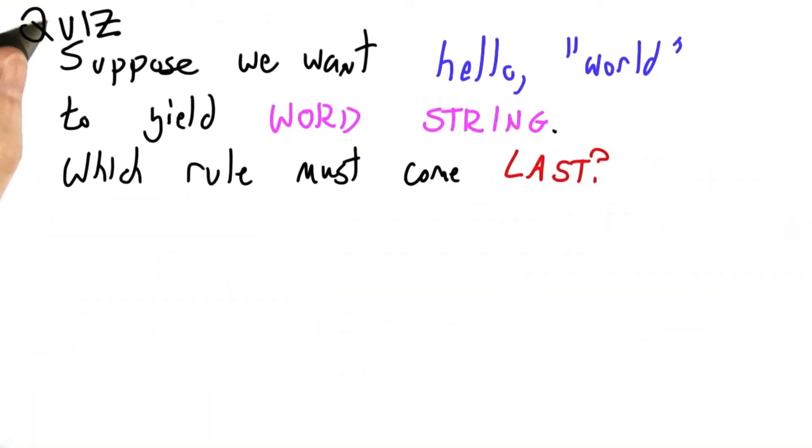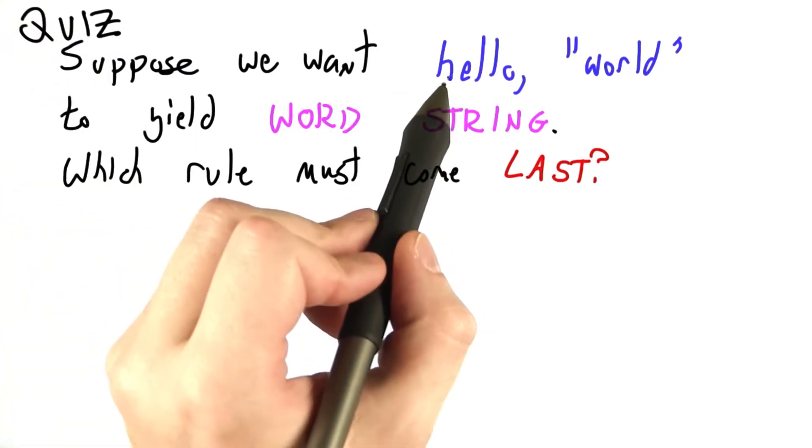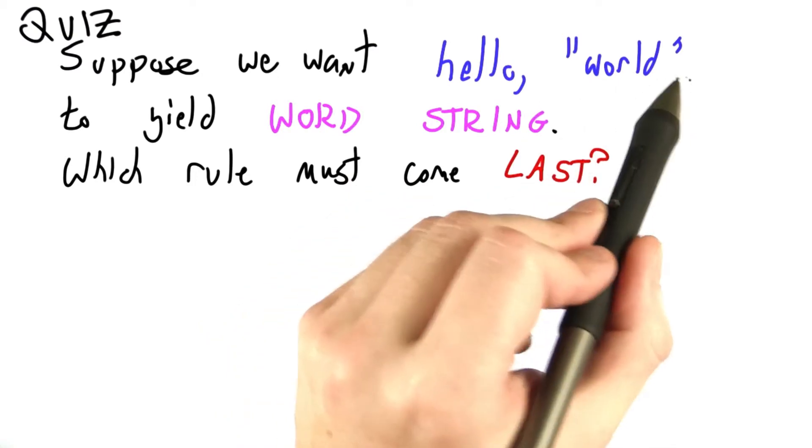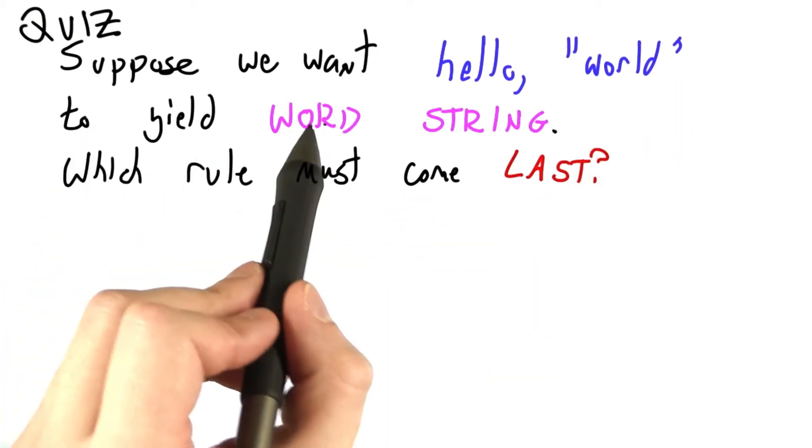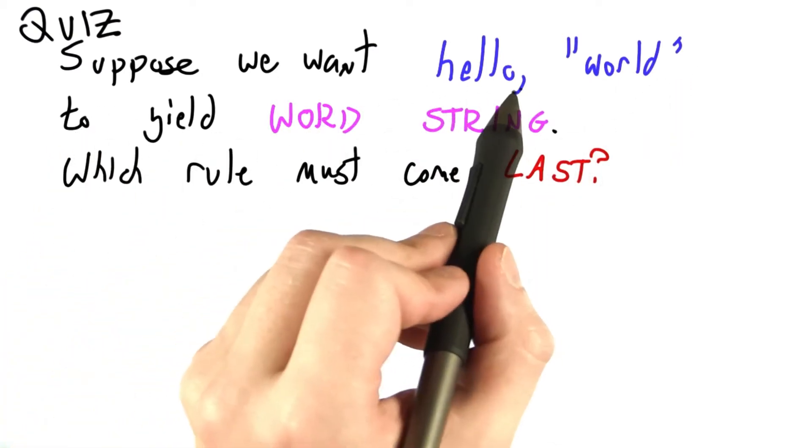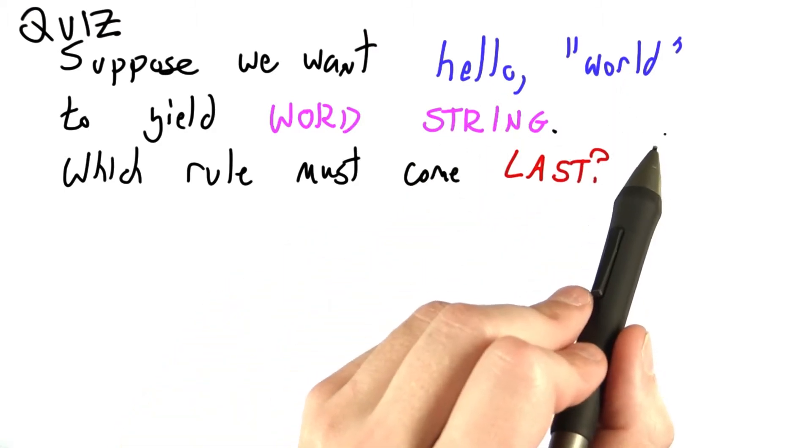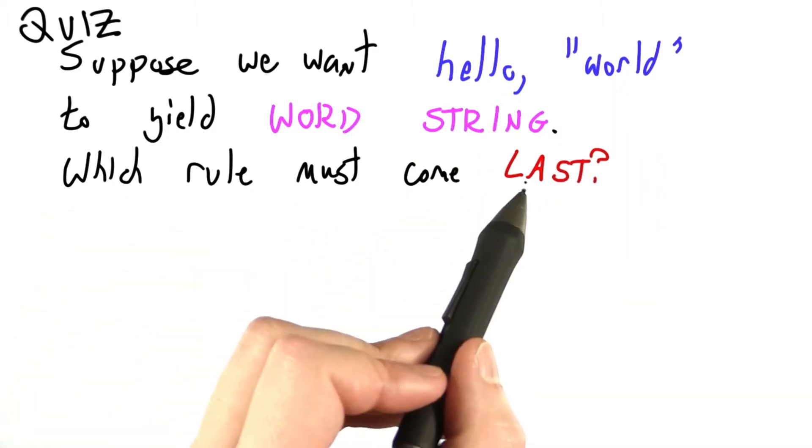So let's investigate this issue in the form of a quiz. Suppose we have the input string hello, quoted string world, and we really want that to yield word, the word hello comma, followed by a string.